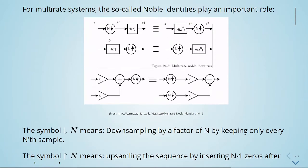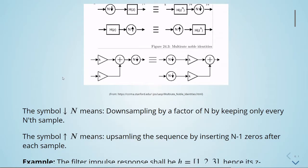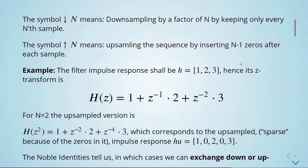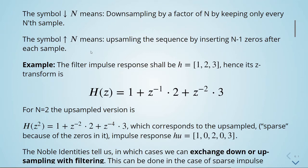The symbol with the arrow pointing down means downsampling by a factor of n, achieved by keeping only every nth sample. The symbol with the arrow pointing up means upsampling the sequence by inserting n minus one zeros after each sample.